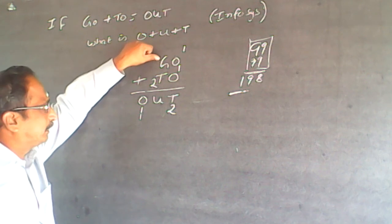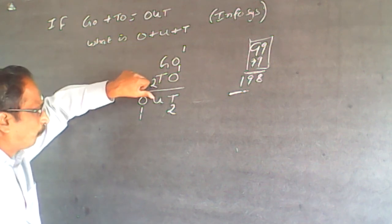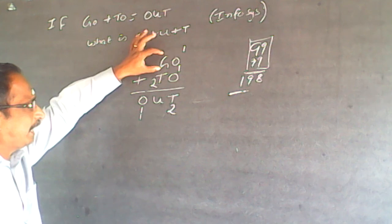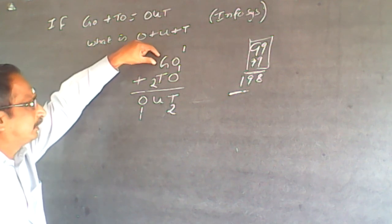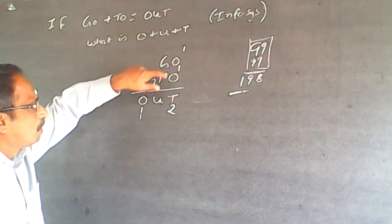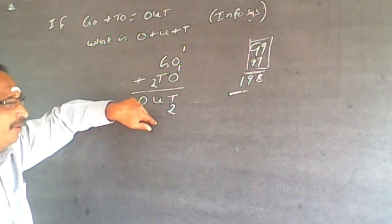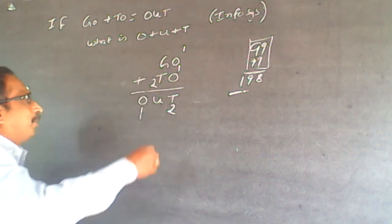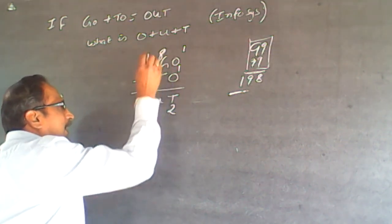In case I write G as 9, 9 plus 2 will become 11, O will also be 1. O is 1, U also cannot be 1. Therefore, G cannot be 9. It can only be 8. This will become 0.